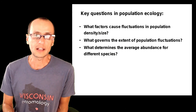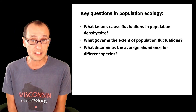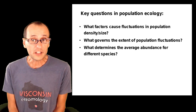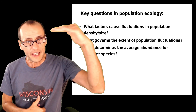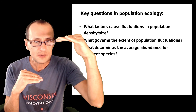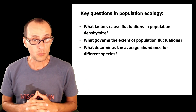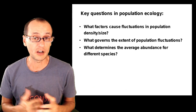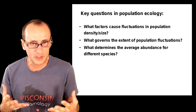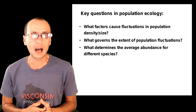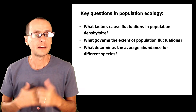So the key questions in population ecology are: what factors cause fluctuations in population density or size? What governs the extent of those fluctuations — why do they get big and small? Why are some populations very high and others quite low for different species, and what sets the average abundance? We'll spend the remainder of this lesson trying to dissect some of the factors responsible for that. I've already alluded to the fact that consumers may be important in driving this — predators, parasites, disease, and things like that.